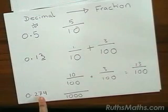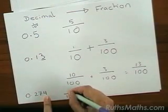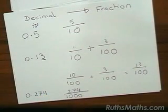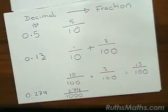And we have the numbers two, seven, four. So there we go. 0.274 is the same as two hundred and seventy-four thousandths.